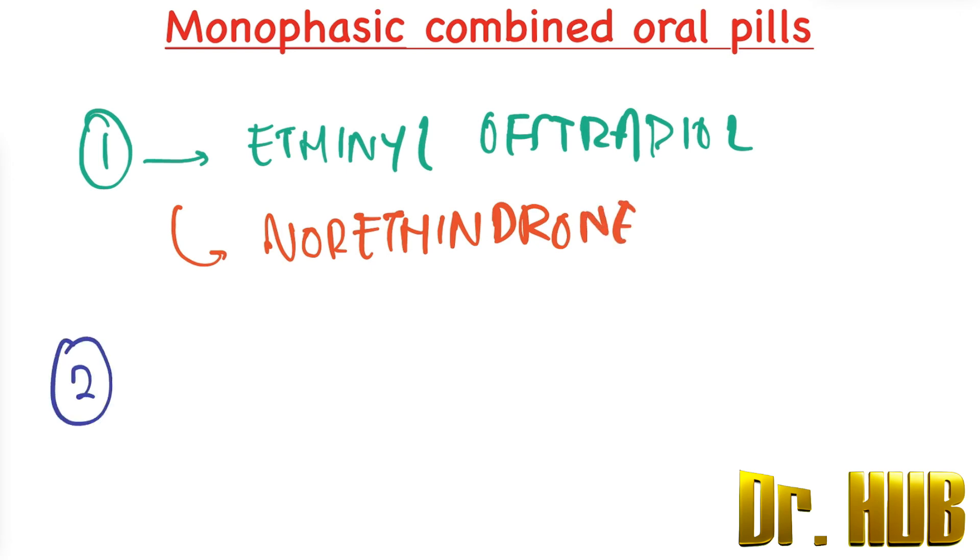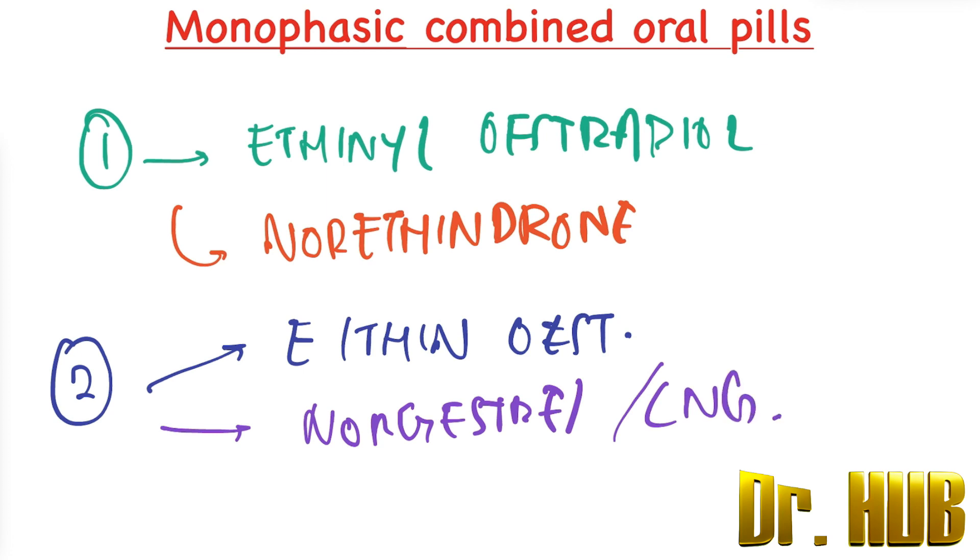Next we look at the second generation. The estrogen includes, again the same, ethinyl estradiol. And the progestin includes norgestrel and also levonorgestrel, or LNG.